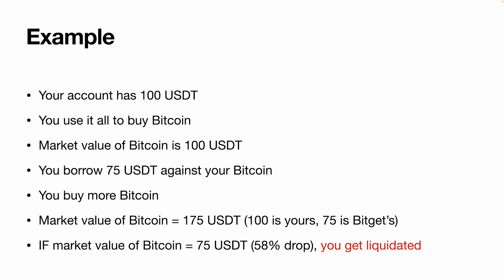As an example: your account has 100 USDT. You use all of it to buy Bitcoin, so you have $100 worth of Bitcoin. You then decide to use those coins as collateral to borrow 75 USDT, and use that 75 USDT to buy more Bitcoin because you think the price is going to go up. At that moment, the value of the Bitcoin you have is worth 175 USDT — 100 of which belongs to you and 75 of which belongs to BitGAT.